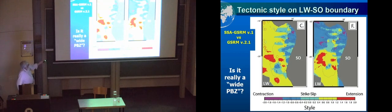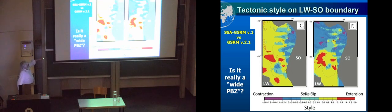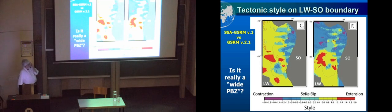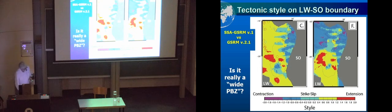Coming back to Madagascar and southern Madagascar, this comparison of old versus new on a different style shows contraction versus extension and strike slip. Madagascar is quite a complicated area and we still have a lot of work to do there. The northern area of Madagascar is volcanic with a volcanic hazard and young rifts developing. The whole issue of whether this is strike slip or contraction is quite controversial still — I'm not convinced either model has captured the full story.